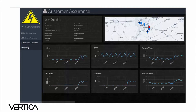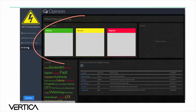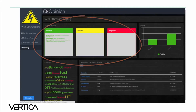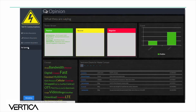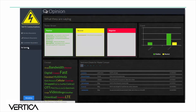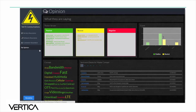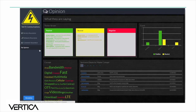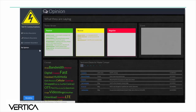The Opinion dashboard shows a Twitter stream from customers along with sentiment analysis graphs. We can see what positive, negative, and neutral comments users are making about a variety of topics including reliability, integrity, and accessibility.